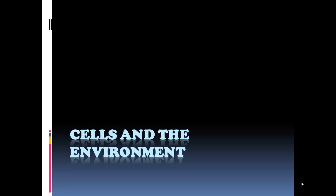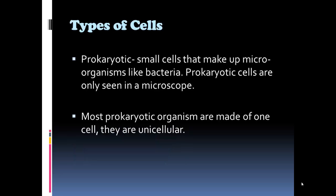Let's talk about cells and the environment today. Just to remind you of some of the things you should know about cells, there are two types. The first type is a prokaryotic cell. A prokaryotic cell's entire organism body is made out of one cell, so it is unicellular, and they make up microorganisms.